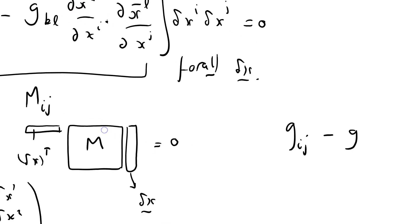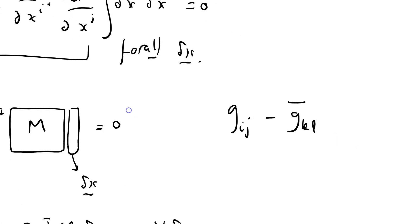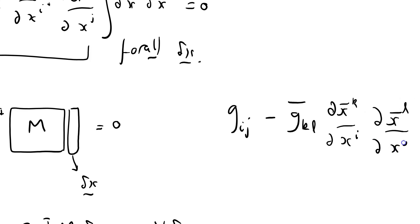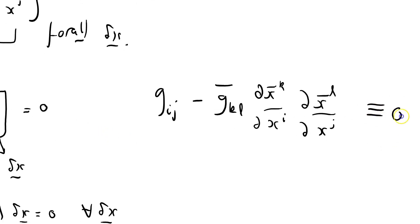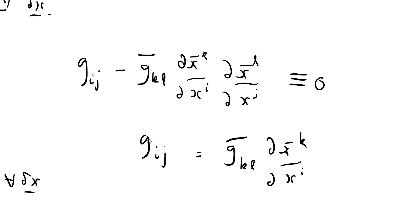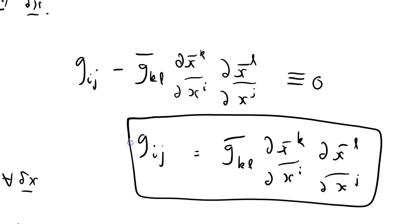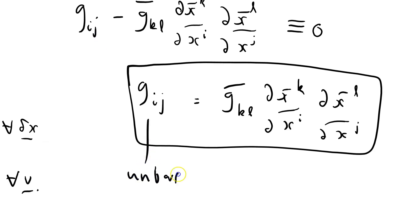That means Gij minus Ḡkl (∂x̄ᵏ/∂xⁱ)(∂x̄ˡ/∂xʲ) is identically equal to zero. And that of course means: Gij equals Ḡkl (∂x̄ᵏ/∂xⁱ)(∂x̄ˡ/∂xʲ). This is our transformation law for the metric tensor, taking us between an unbarred coordinate system and expressing the metric tensor in the barred coordinate system.